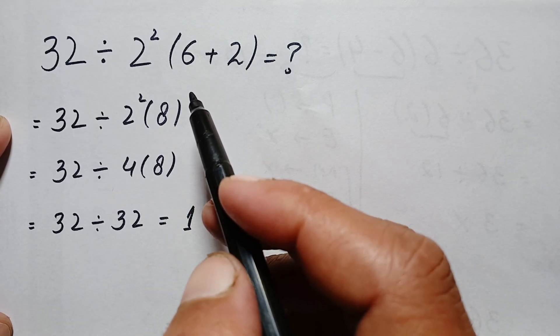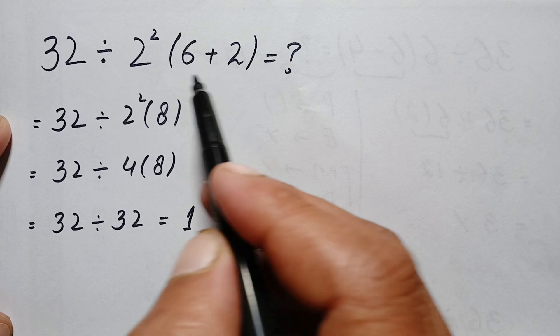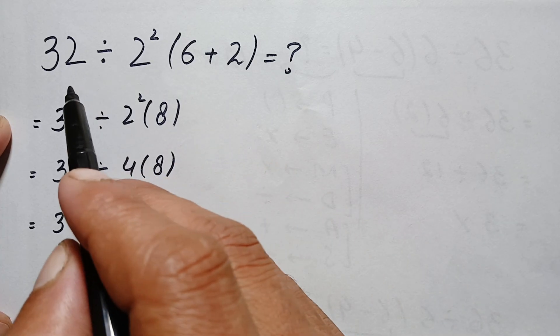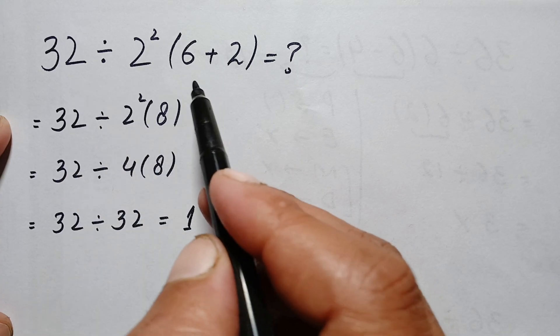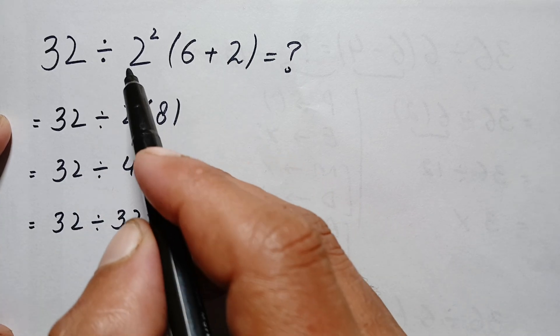Here first we have to simplify the parenthesis, then exponents, then division and multiplication from left to right, and lastly addition and subtraction from left to right. So first we will simplify this parenthesis, then exponents.